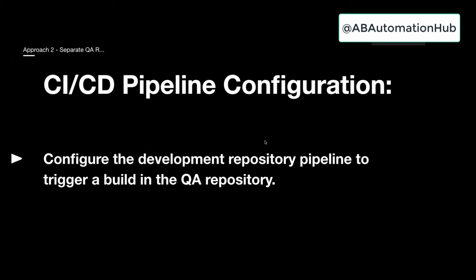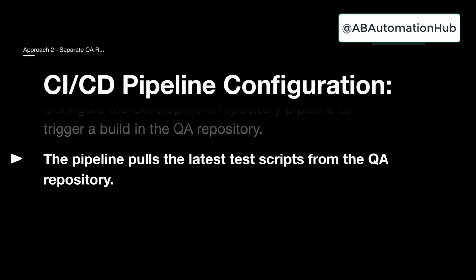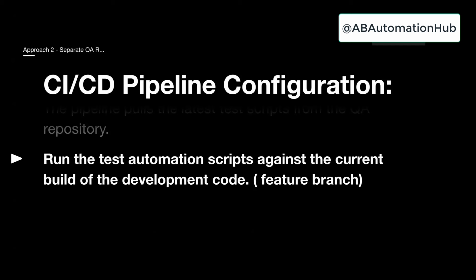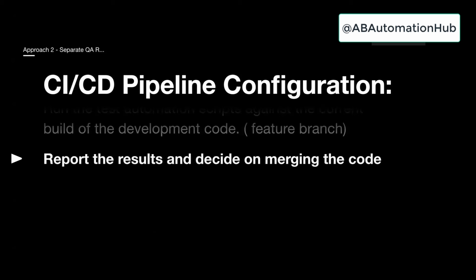For GitHub Actions, you call a different workflow file from the QA repository. The pipeline pulls the latest scripts from the QA repository and runs your test automation script against the current build. In this case we are not merging our code — this is before merging. Your feature branch is deployed into the environment and you run your test cases on that environment. You can then report the results and decide if you want to merge the code or not.